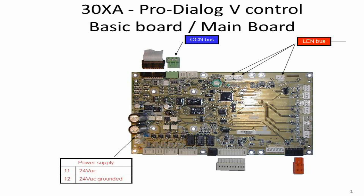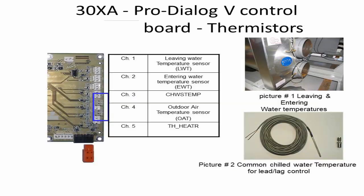CCN stands for Carrier Control Network. The top, middle, and left side of the board shows the connection for LEN communication bus. The leaving water temperature sensor is connected on Channel 1 on the baseboard. The entering water temperature sensor is connected on Channel 2. The chilled water system temperature sensor is connected on Channel 3.